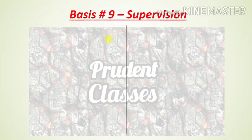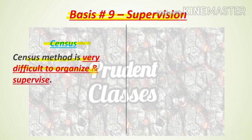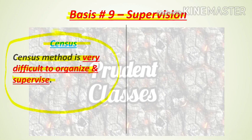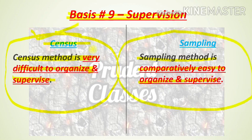Basis number 9 is supervision. In the census method, it is very difficult to organize and supervise because the entire population is being studied. In the sampling method, it is comparatively easy to organize and supervise since you are only dealing with a smaller portion of the population.